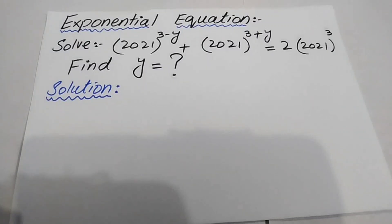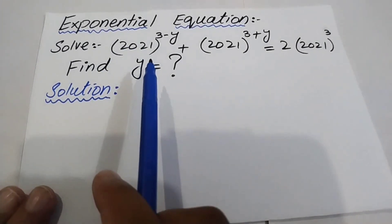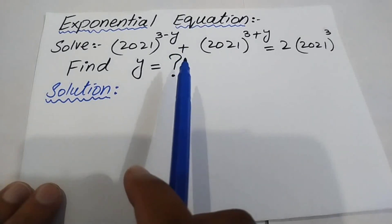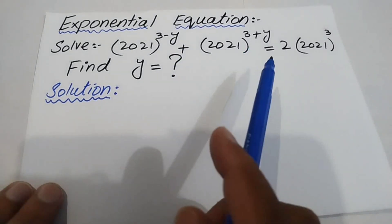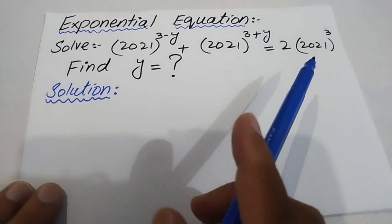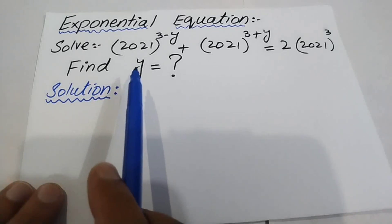Hello everyone, welcome to the Map of Mathematics. In today's lecture we discuss exponential equations. The question on your screen is: 2021^(3-y) + 2021^(3+y) = 2 × 2021^3, and we will find the value of the variable y.